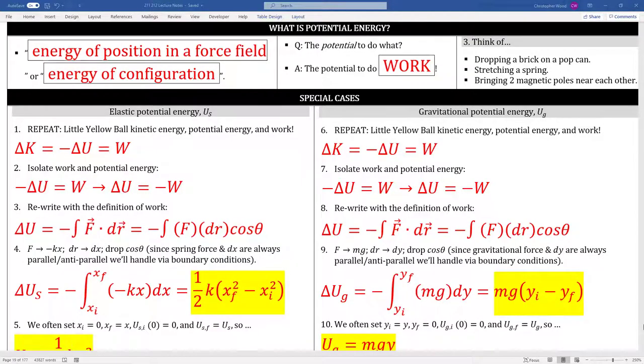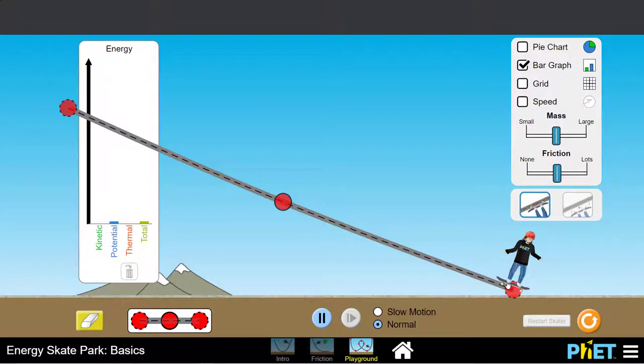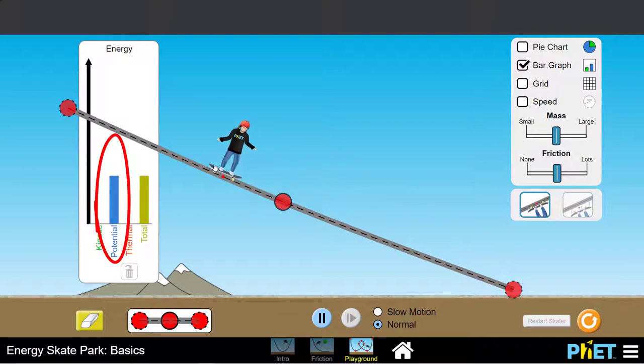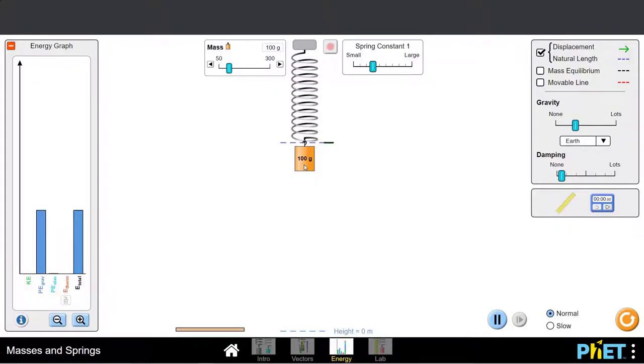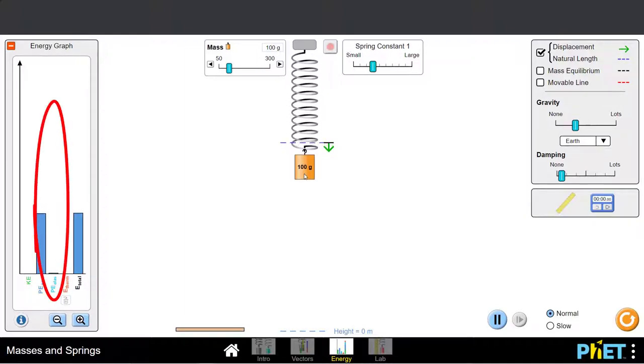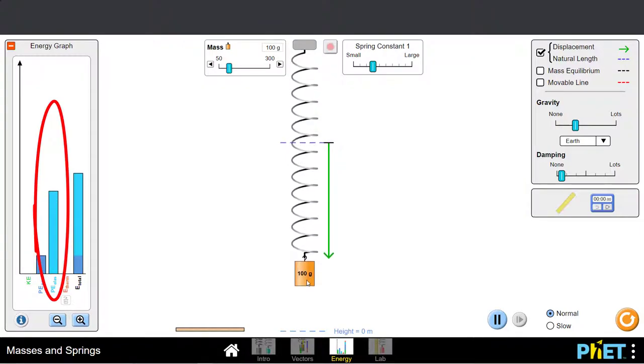Next section, potential energy. Potential energy is the energy of position in a force field or the energy of configuration. The potential energy of a skater near the surface of the earth is less than the potential energy of the same skater further away from the surface of the earth. This skater has more gravitational potential energy. Similarly, this spring has a certain amount of elastic potential energy. When I stretch this spring like you see here, now I have the same spring with a lot more elastic potential energy. Again, when you think of potential energy, think of energy of position or energy of configuration.